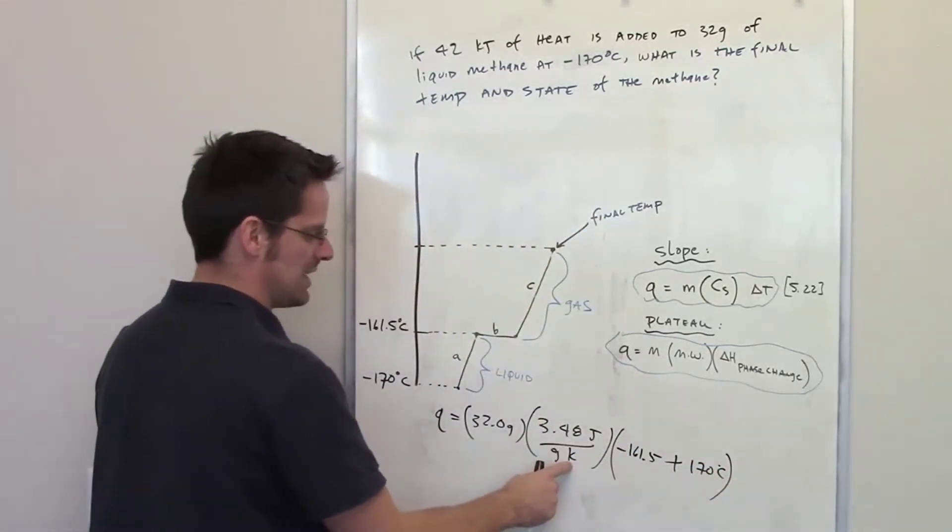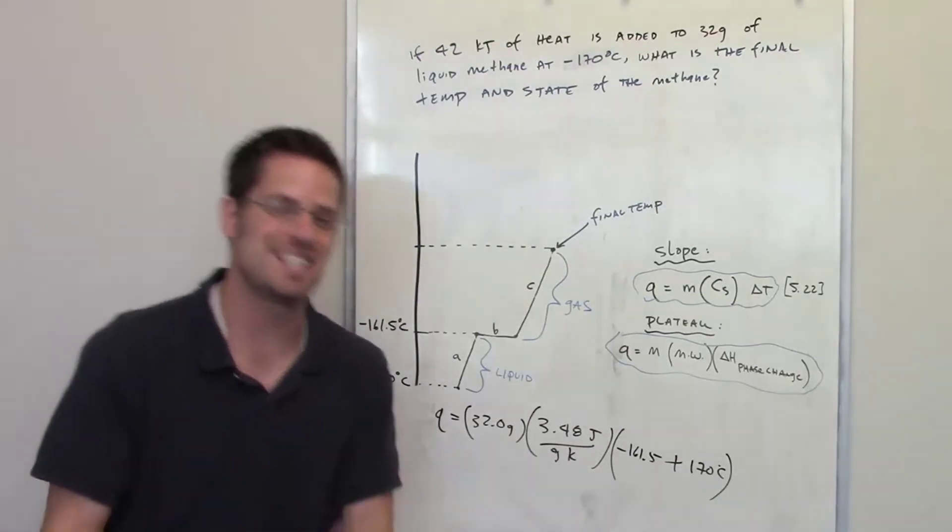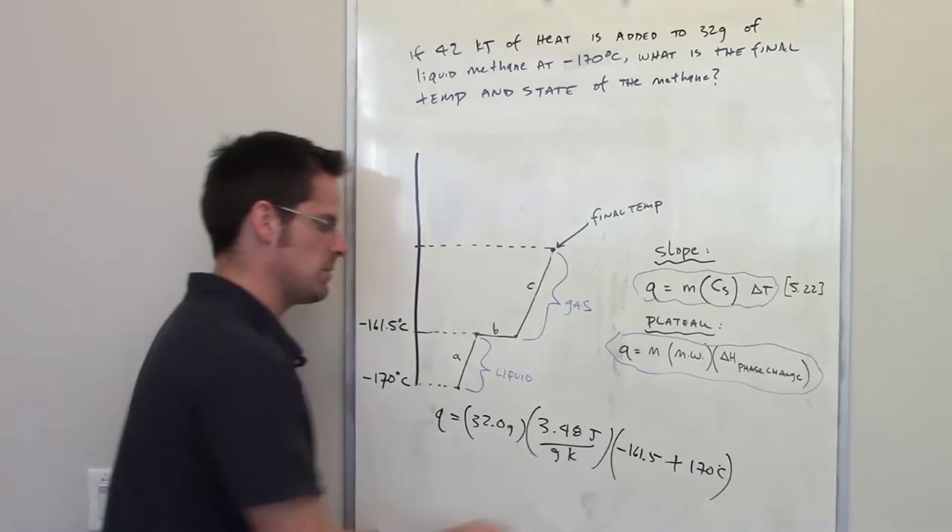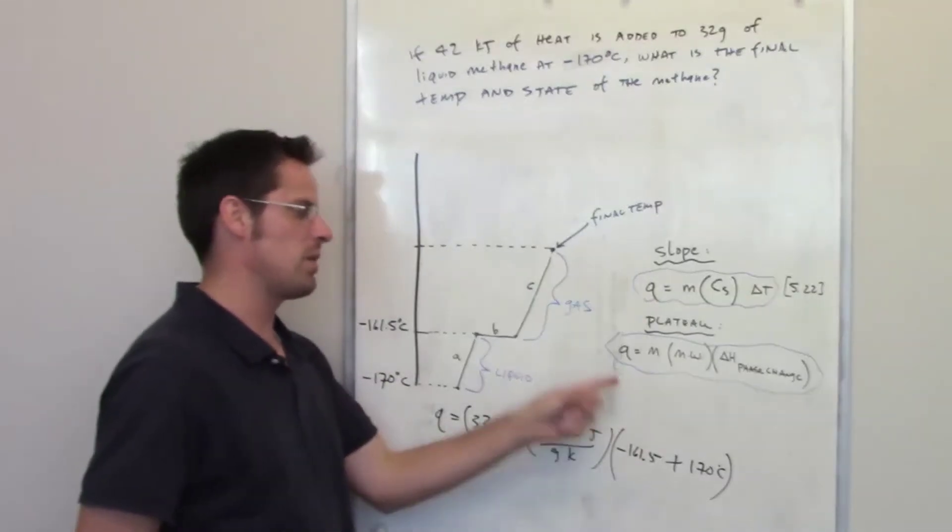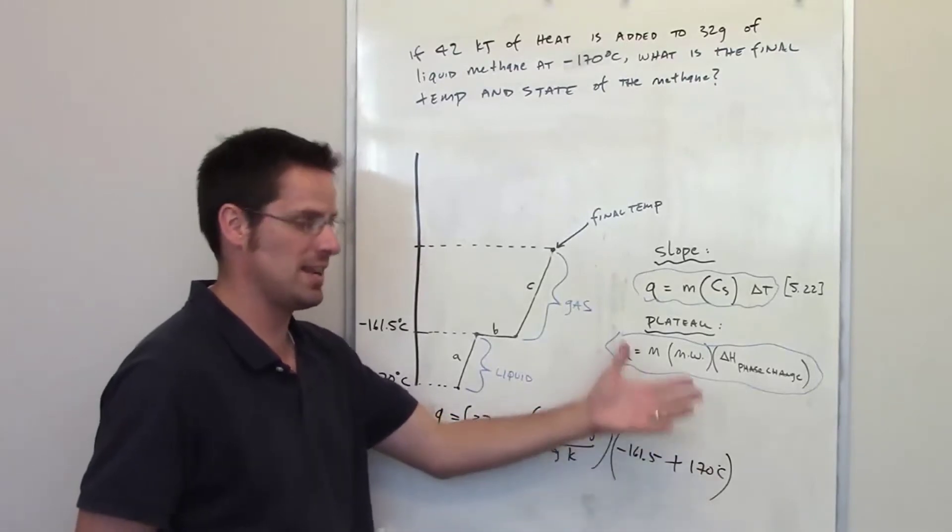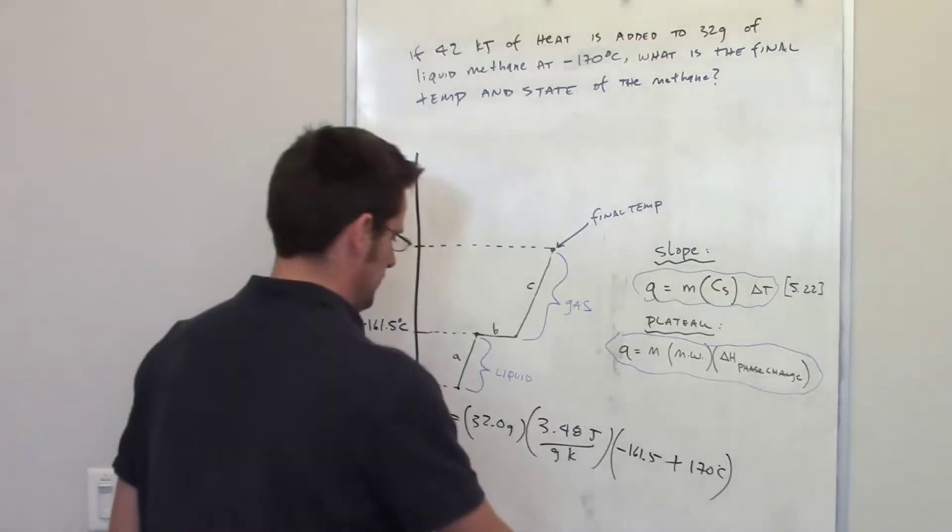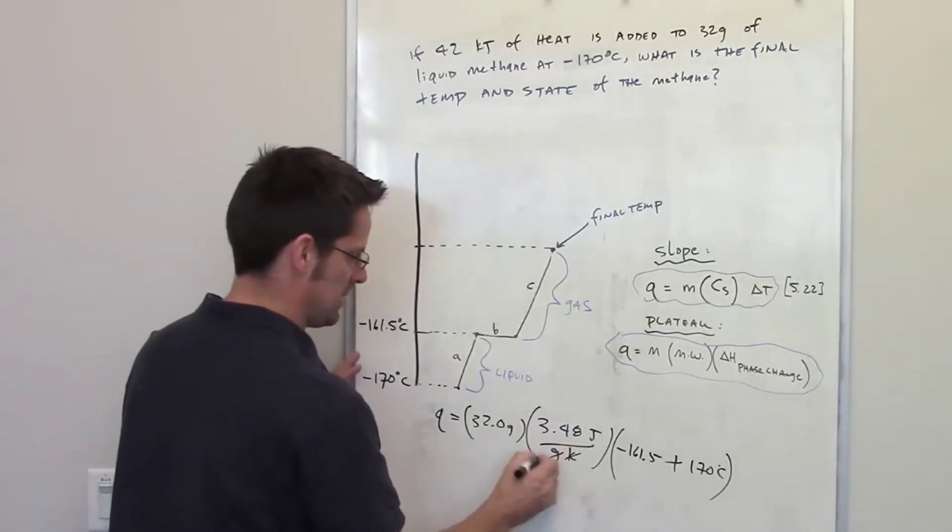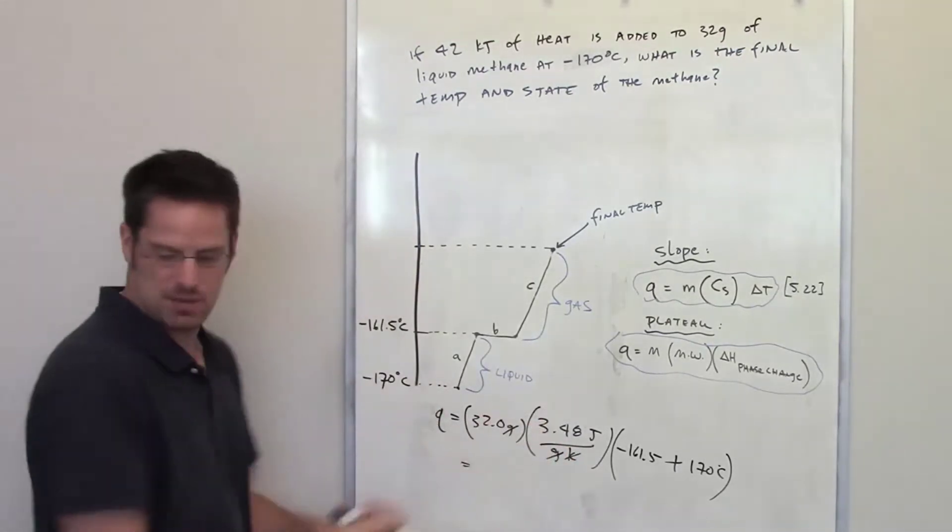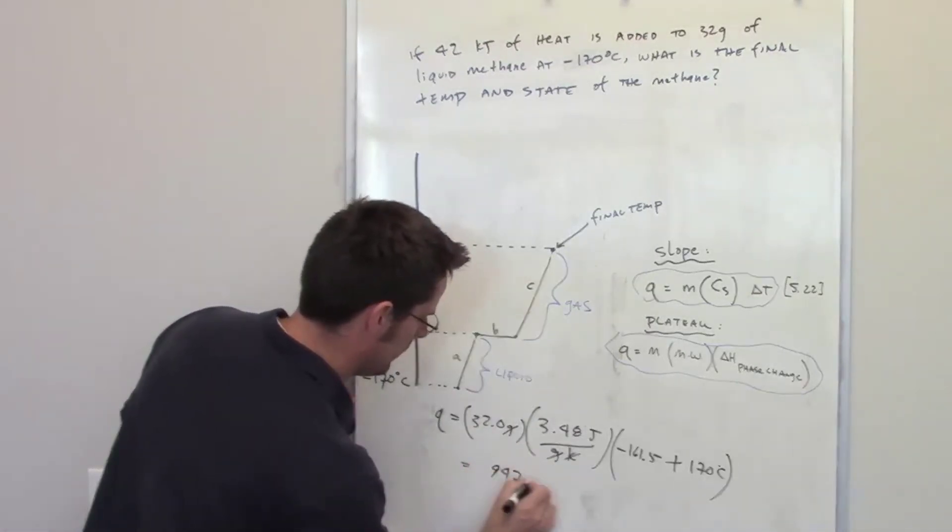That's in degrees Celsius, which admittedly doesn't cancel out degrees Kelvin. However, keep in mind, the only difference between Celsius and Kelvin is 273.15. If I took this temperature and converted it to Kelvin, I would add 273.15. If I took this temperature and added it to Kelvin, I would also add 273.15. The difference between the two would be exactly the same. So I can cancel out my Kelvins, I can cancel out my grams. When I throw that into my calculator, the final answer ends up being 947 joules.